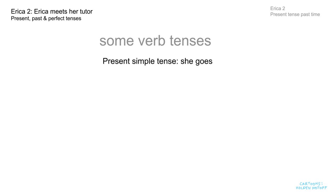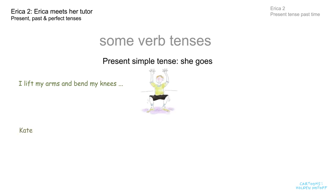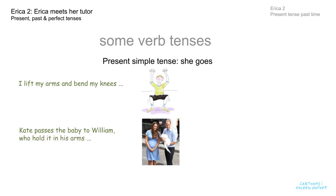First, the present simple tense — 'She Goes.' In this story, we use the present simple in a special way. We sometimes use it to describe what's happening right now: 'I lift my arms and bend my knees, like this.' Or another one: 'Kate passes the baby to William, who holds it in his arms.' We can also use the present simple to make a story in the past feel as if it's happening right now, and that's what we did in this story.